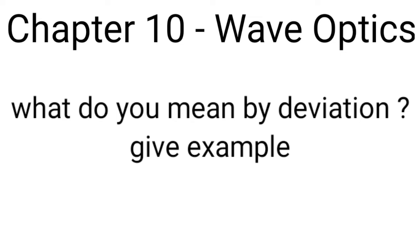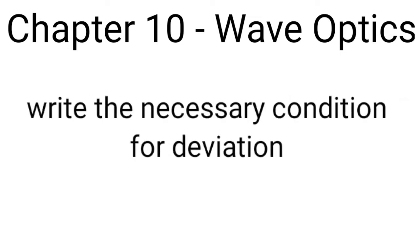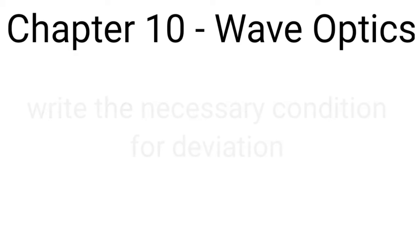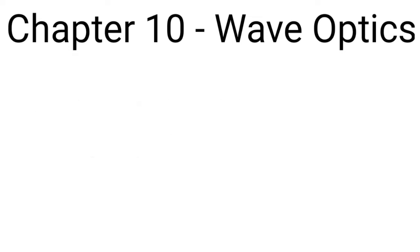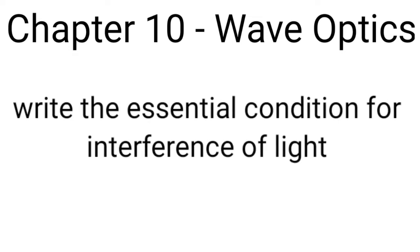The very first question is: what do you mean by deviation? Give an example. Next question is: write the necessary condition for deviation. Next question is: write the Huygens theory of secondary wavelets. Next question is: write the essential condition for interference of light.